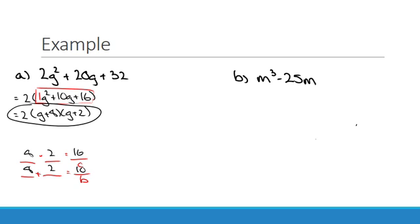Example B. Same first step. Is our greatest common factor? And once again, there is one. There's an m. What am I left with? m squared minus 25. Now, check out the bracket to see if it can do anything else. Well, the second question, how many terms? There are two terms.